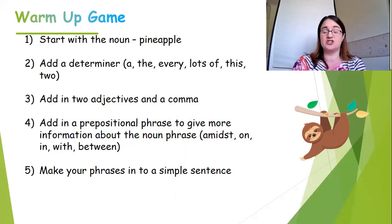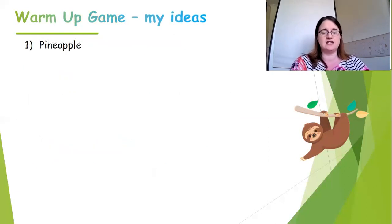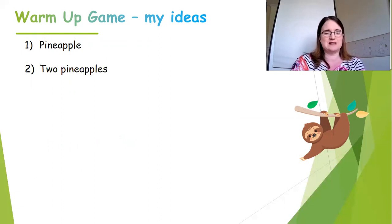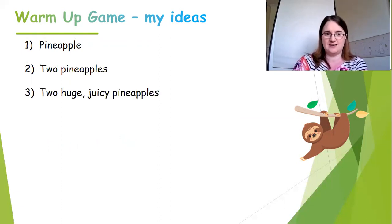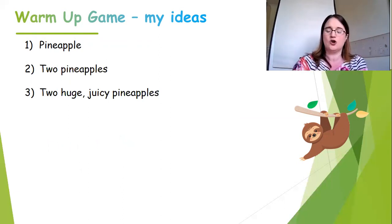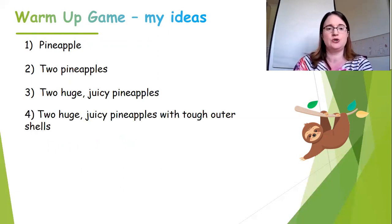Shall we have a look at what I wrote? Yours won't be exactly the same as mine, but it'll give you an idea. We're going to have another go at this game tomorrow. So I started with the word pineapple - nice and easy. Then I put a determiner in front: two pineapples, so that's determiner and noun. Then I expanded my noun phrase with two adjectives: two huge, juicy pineapples. Huge describes its size and juicy is about its taste. Remember those two adjectives need to contrast - they shouldn't be about the same thing.